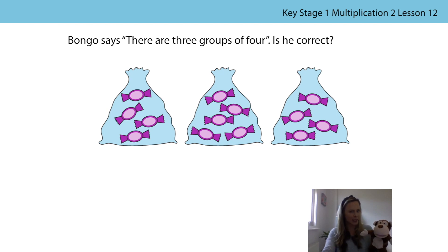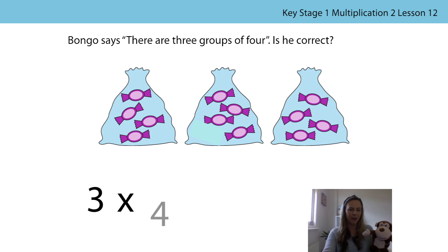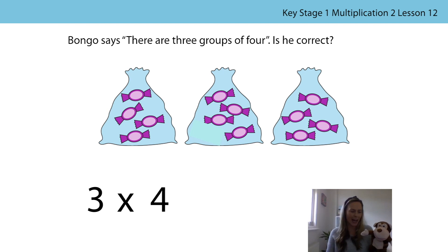We can get rid of one of the sweets in that group — that's better, now our groups are equal. There are four sweets in each group and we've got three groups, so we can write our multiplication expression: three times four. The three represents the number of groups and the four represents the number of sweets in each group. Thank you for helping Bongo to share his sweets out equally — his friends will be really happy now.